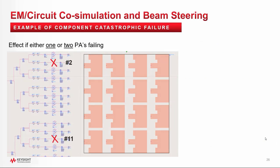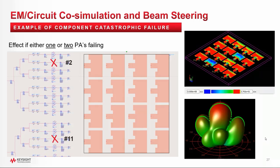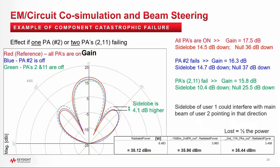Now let me show you a more interesting case. Here I am experimenting on a catastrophic failure case with either one or two PAs open-circuited. PA number 2 and PA number 11 are disconnected with very low current density. The red profile is when all PAs are on and functional. The blue profile is when one PA fails, and the green profile is when PA number 2 and PA number 11 fail. What is very interesting is the side lobe gets higher as the main lobe is lowered — they move in opposite directions. This is totally different from what we saw in the intermittent case with four adjacent PAs off.